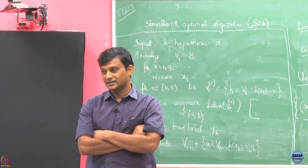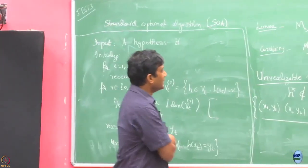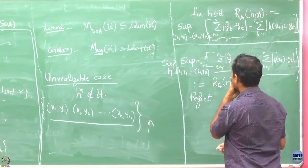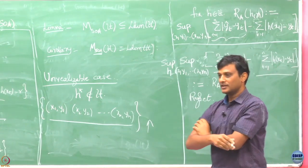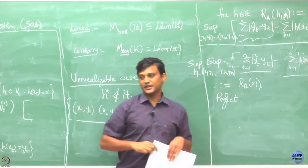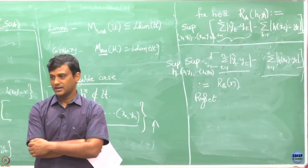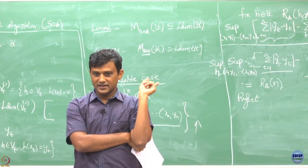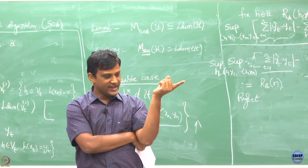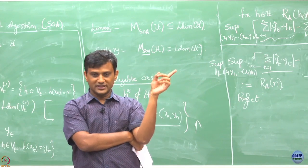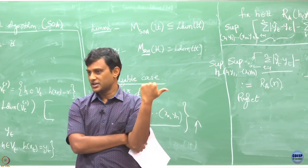Only can it be 0 if for the best hypothesis you have, you are doing similarly. Now we get to the notion of learnability. How did you define learnability in the realizable case? In the realizable case, we said that as long as the number of mistakes can be bounded by some finite number, the hypothesis class is learnable by algorithm A. What is the notion of learnability here?